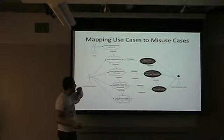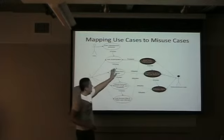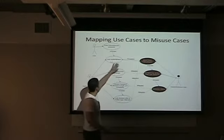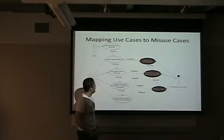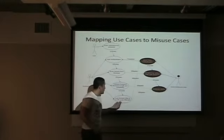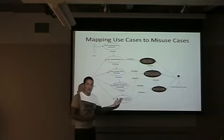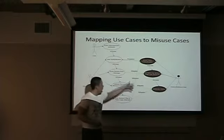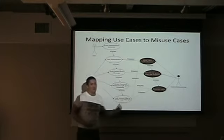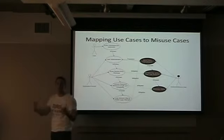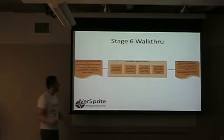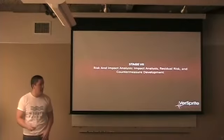From that we get to stage six's output: mitigations. For brute force attacks on user authentication, you can have countermeasures in your applications that are simple yet introduced at various levels. Now you start thinking about countermeasure development — not just remediation, but countermeasure development within your infrastructure and within your applications.